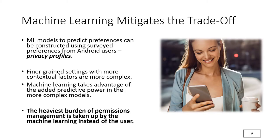Our work shows that machine learning can mitigate the trade-off between accuracy and user burden. Finer-grain settings result in a much larger space of settings, and on paper there will be even more settings in more complex models that introduce additional contextual factors. But permissions subject to purpose let us better capture people's settings. The literature shows these permissions are more in tune with users' expectations of privacy, and we show that they have added predictive power.